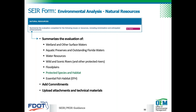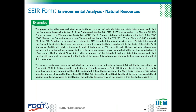The natural resources section includes subsections for wetlands, protected species, and other natural resources, where you also upload the natural resources evaluation and coordination or concurrence letters with the resource agencies. An example of information included in the protected species and habitat subsection states that the project was evaluated for potential occurrences of federally listed and state listed animal and plant species, includes the result of the evaluation and references a map and a table, and includes the determination that there were no federally designated critical habitat in the project study area.